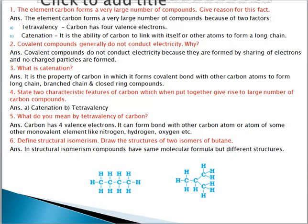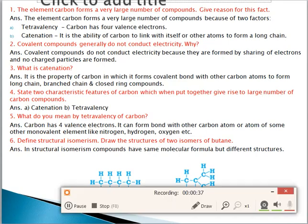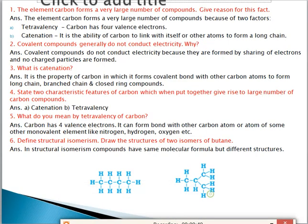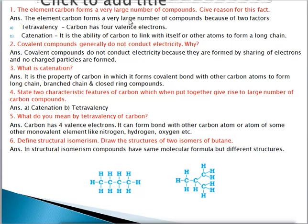The first question is: the element carbon forms a very large number of compounds. Give reason for this fact. You know that there are so many compounds of carbon like carbon tetrachloride, diamond, graphite, carbon dioxide — lots of compounds are there. So why does carbon form a large number of compounds? We have to give the reason for that.